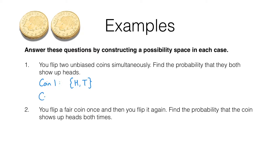The second coin also has two possible outcomes: heads and tails. So we have a sample space for flipping coin one and a sample space for flipping coin two. Note that for each coin the two outcomes are equally likely because we're told the coins are unbiased — that means they're fair. You've got a probability of a half of the coin showing heads and a probability of a half of showing tails, and that's true for both coins.